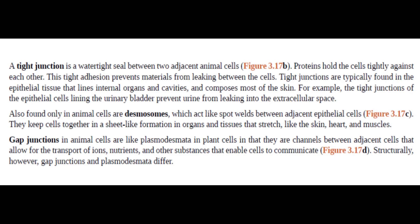Also found only in animal cells are desmosomes, which act like spot welds between adjacent epithelial cells. They keep cells together in a sheet-like formation in organs and tissues that stretch, like the skin, heart, and muscles.